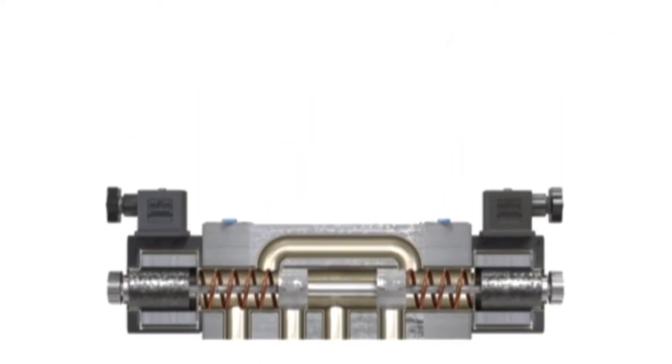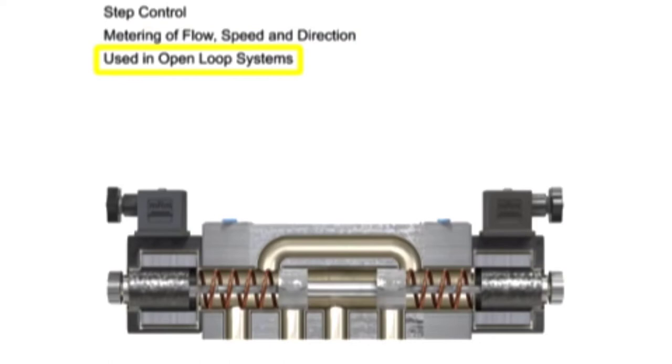Proportional control valves allow for variable control of spool movement, which allows more step control and metering of flow, speed, and direction. Most valves of this design are used in open-loop systems to smoothly accelerate and or decelerate an actuator or cylinder.